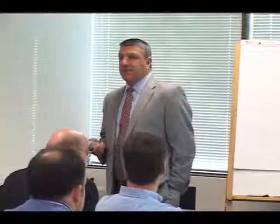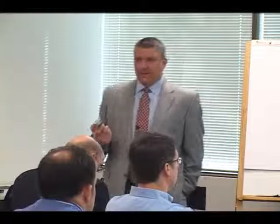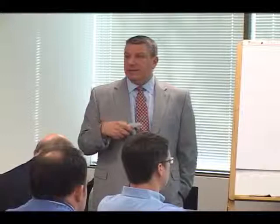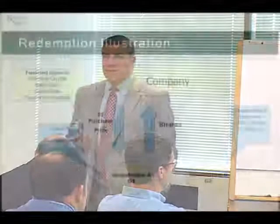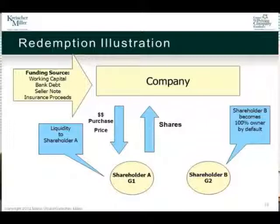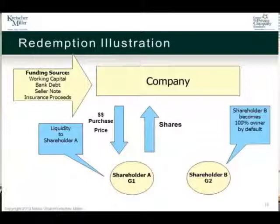Let's say in this example that shareholder A had 50 shares and shareholder B had 50 shares. When the company redeems those 50 shares and puts them in its treasury, by de facto, shareholder B becomes 100% owner because those are all that's outstanding after the redemption. So when they start 50-50, shareholder A's shares get retired and put into treasury — de facto, shareholder B becomes 100% owner. The transfer of ownership from 50-50 to 100% happens indirectly, but it happens. It's a redemption.